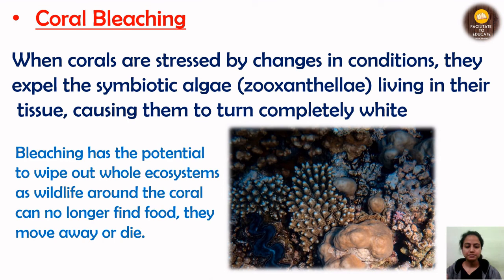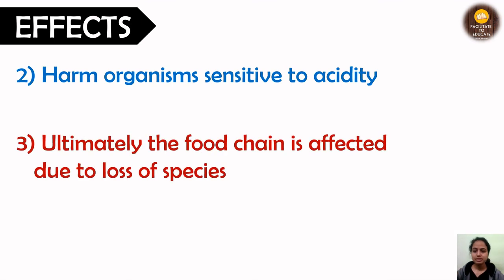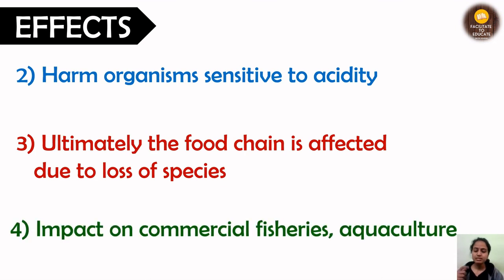Further effects include harm to organisms sensitive to acidity — they will die off or be unable to live properly in the ocean ecosystem. The food chain and food web of the ocean are affected due to the loss of species. There is also an impact on commercial fisheries and aquaculture, because fishes are dependent on coral reefs, and humans are in turn dependent on those fishes.